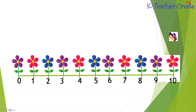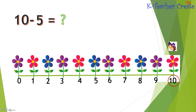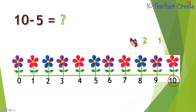Let's do it again, this time with another number sentence. Ten minus five equals. Let's start by putting a circle on the bigger number — the bigger number is ten. So we put a circle on ten, and then we count backwards five times: one, two, three.